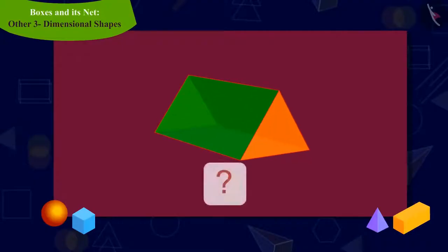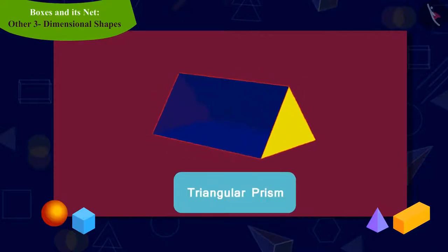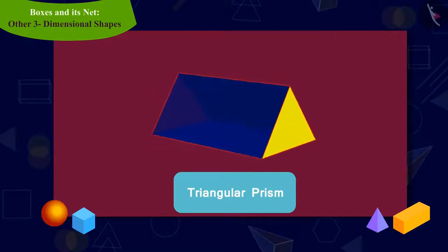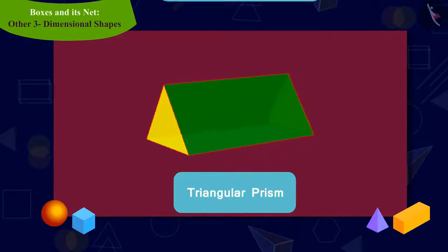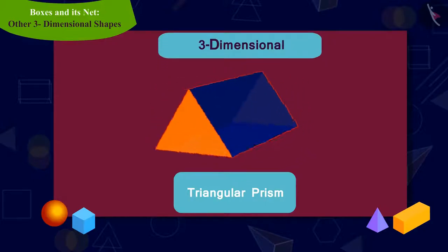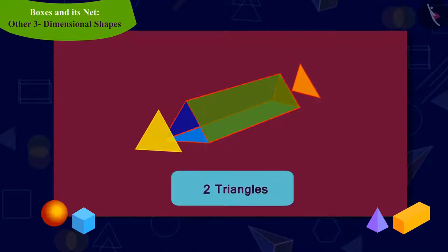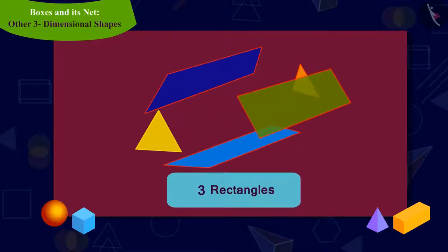Kids, can you recognize this shape? Yes, it is a triangular prism. A triangular prism is a three-dimensional shape which has five faces in total, of which two are triangles and the remaining are rectangular faces.